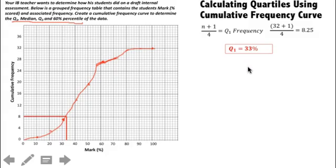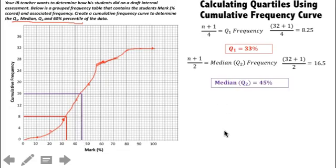We do a similar process for the median, which is Q2. The only difference is instead we're going to do n plus 1 divided by 2. So in this case, we have 32 plus 1 divided by 2, which is 16.5. That's our median frequency. So again, I'm going to find that location on the graph and draw a line there to our curve. Now what's the mark percentage associated with that point on the curve? Well, it's about 45%. So our median, our Q2 is about 45%.